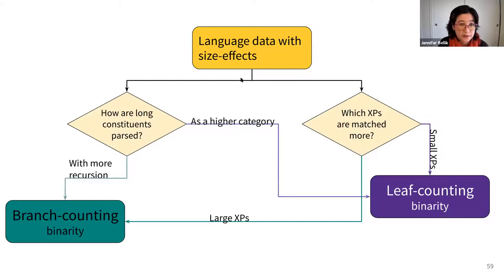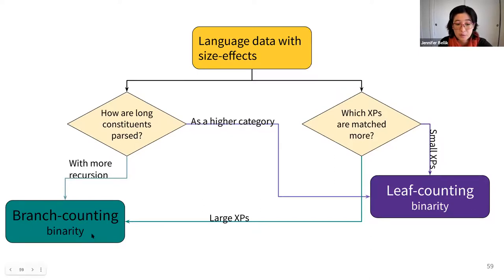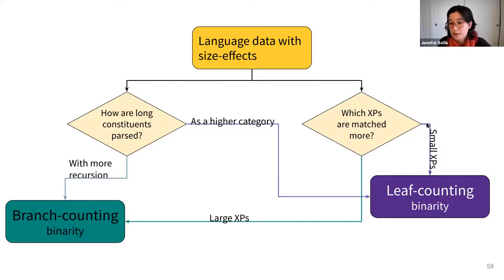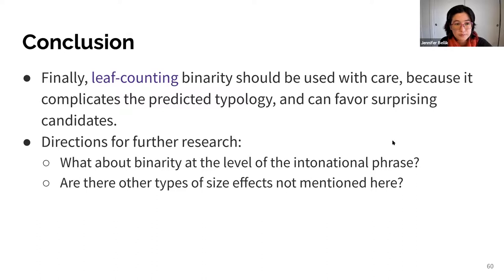For the next time you work with language data that has size effects, here's a flowchart: ask how long constituents are parsed. If they are parsed with more recursion, branch counting binarity gives you that. If they are parsed as a higher category, use leaf counting instead. Alternatively, ask which XPs are matched more: if large XPs are more likely to be matched, that derives from branch counting; if small XPs are more likely to be matched, that comes from leaf counting. Finally, leaf counting binarity should be used with care because it complicates the predicted typology and sometimes favors unexpected candidates.